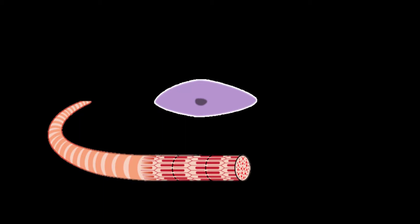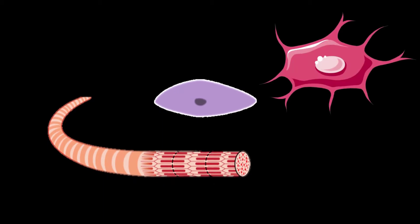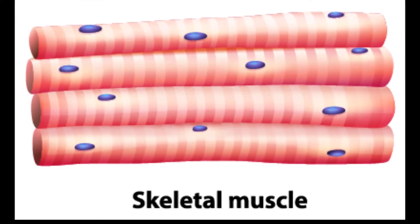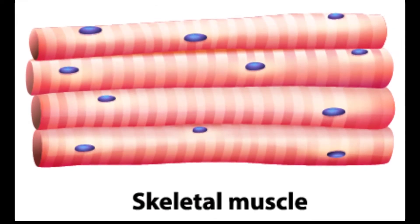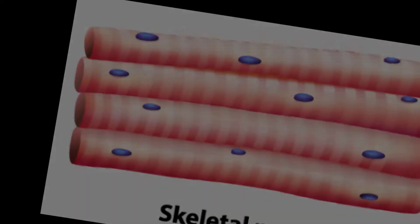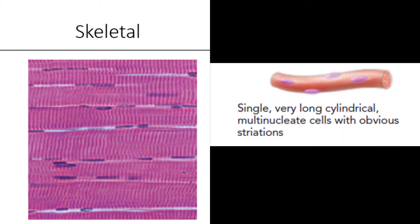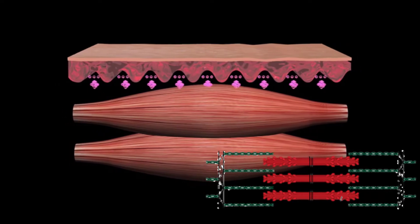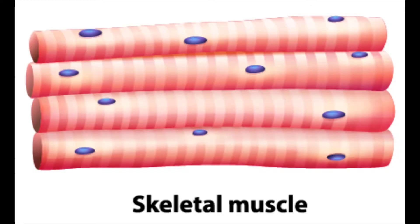The muscle cell, or myocyte, develops from myoblasts that are derived from the embryonic mesoderm. Under a light microscope, muscle cells appear striated or striped, with many nuclei squeezed along the membranes. These striations appear due to the regular alternation of contractile proteins. The contractile proteins in skeletal muscle are actin and myosin. Muscle cells are multinucleated as a result of the fusion of many myoblasts that fuse to form each long muscle fiber.